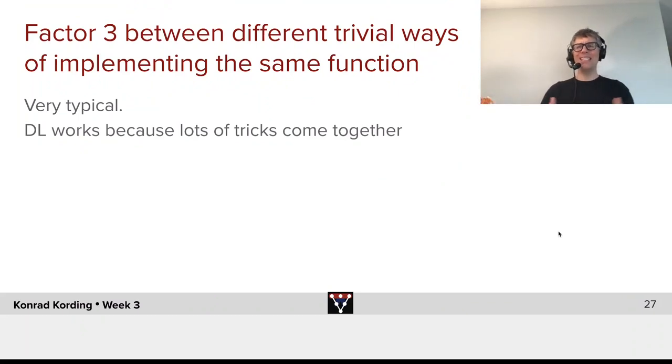So what did we see here? We easily get a factor three between different trivial ways of implementing the very same function. And this is quite typical. It is another example of how deep learning works so well because we have lots of places where we gain ourselves a factor three or maybe a factor of ten by doing certain things right.